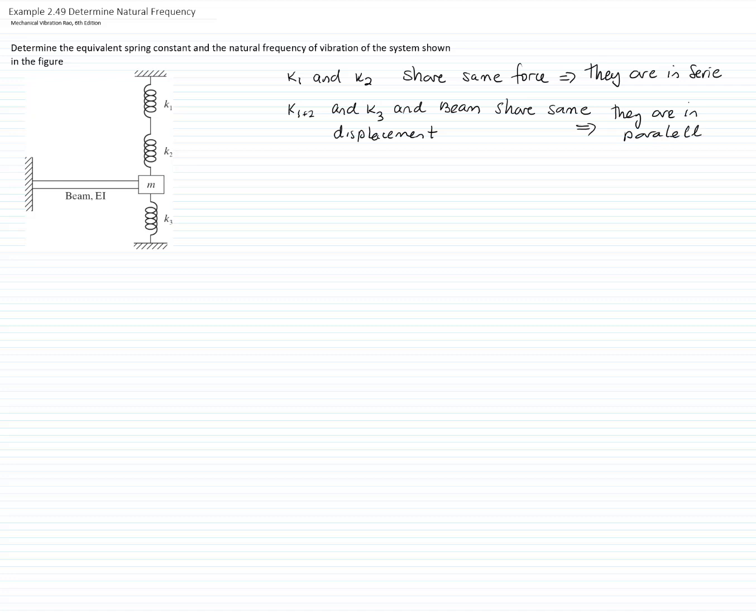We can then model our system as an equivalent constant of a spring for K1 and K2, and then in parallel with the constant for the beam, which is an equivalent constant of a spring also for the beam, and K3.